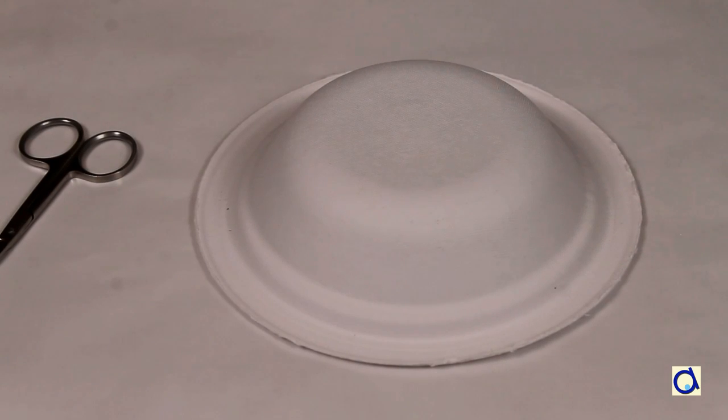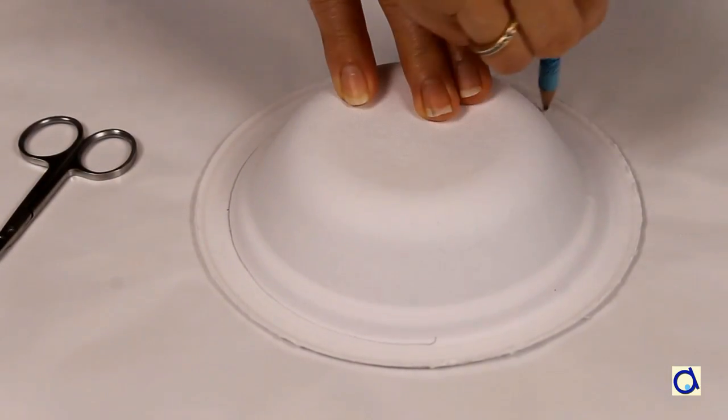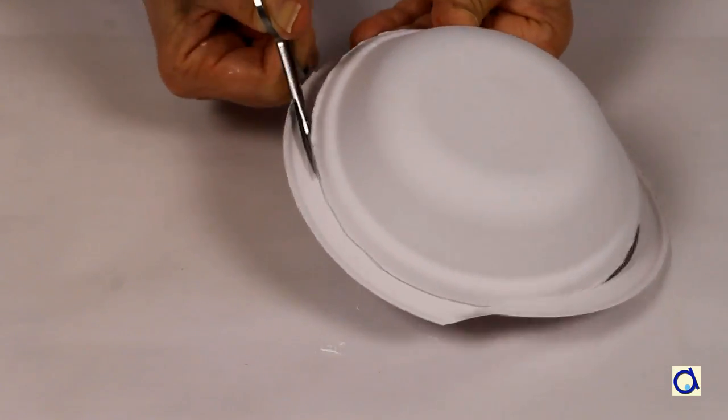To make the mushroom, first remove the flat edge of the ball. To make that easier, draw a line all along the rounded edge of the ball and then cut along the line to remove the flat edge.